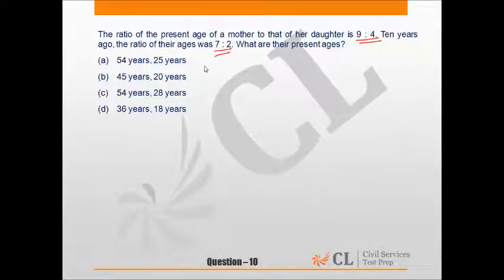If you look carefully at all the options, the ratio of the present age of a mother to that of her daughter is 9 is to 4. In option A, ages are 54 and 25. It is not in 9 is to 4.